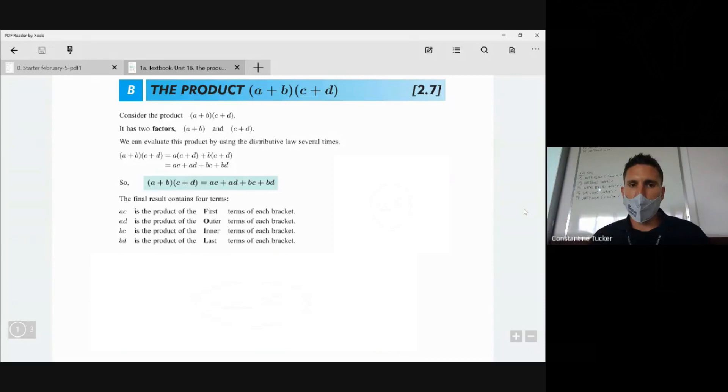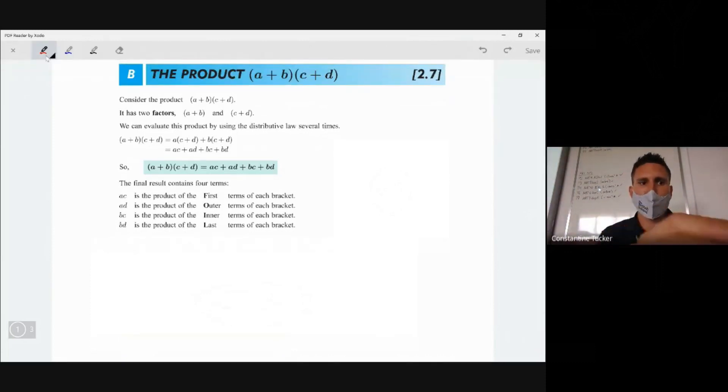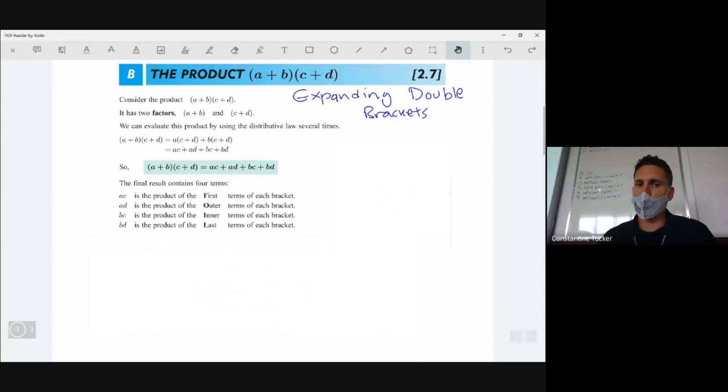We are learning a thing which the textbook is calling the product (a+b) times (c+d). Often in real life we call this expanding double brackets. Now what I've put on Google Classroom is the textbook information and the questions, but I've also put a link to a video on YouTube. If you ever want to go back and revisit your theory, feel free to do that. But here I'm going to demonstrate how this works.